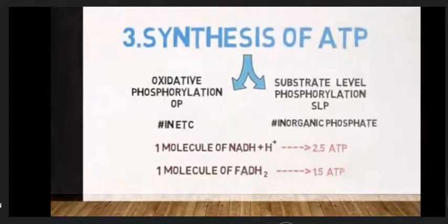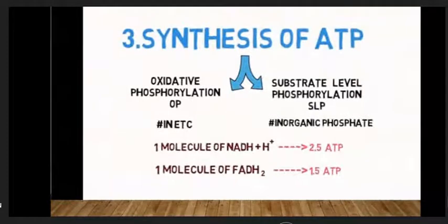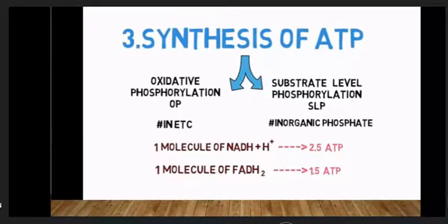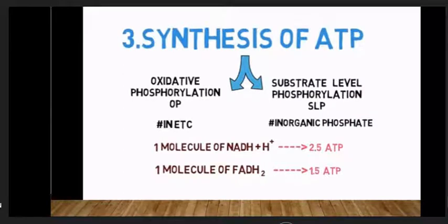ATP synthesis occurs in two ways. First, oxidative phosphorylation, where oxygen and phosphate are combined in the electron transport chain. Second, substrate-level phosphorylation, which occurs in the cytoplasm using inorganic phosphate at carbon position 3. One molecule of NADH plus H+ yields 2.5 ATP. One molecule of FADH2 yields 1.5 ATP.